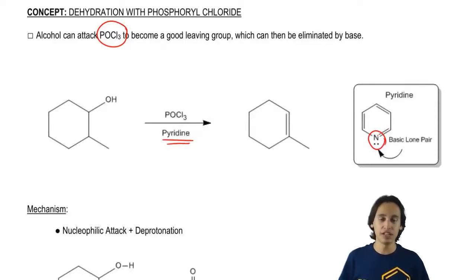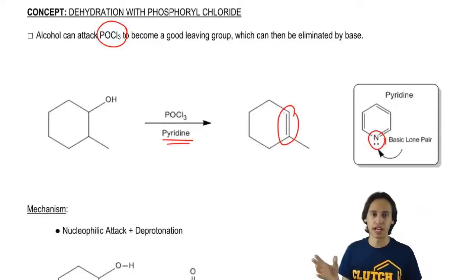So POCl3 and pyridine are going to do an elimination reaction on an alcohol and make a double bond. So that's all you need to know right now in terms of the general reaction.